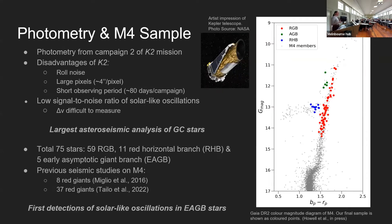In my study I took photometric data from the Kepler telescope second mission, K2. Half of M4 was observed during campaign two for roughly 80 days. Unfortunately there were some disadvantages to the K2 telescope. There is an inherent roll noise in the K2 mission — the telescope would drift by one pixel and then get a correction every six hours, so it was periodic and had to be de-trended out of the photometry.